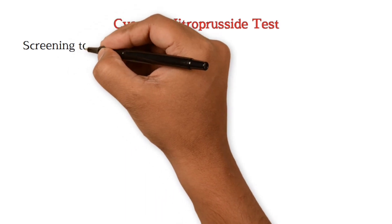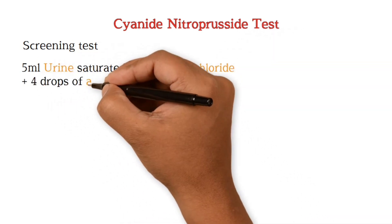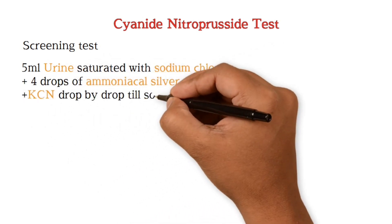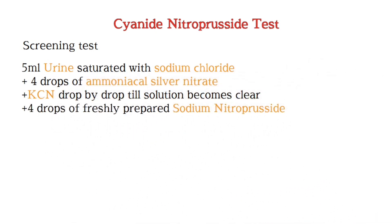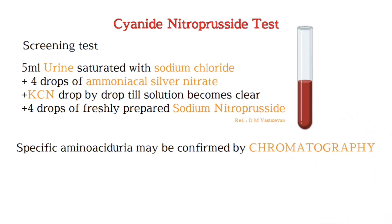Now a brief overview of the cyanide nitroprusside test. Take 5 ml of urine and saturate it with sodium chloride, then add 4 drops of ammoniacal silver nitrate and potassium cyanide drop by drop until the solution becomes clear. Then add 4 drops of freshly prepared sodium nitroprusside. A positive result is indicated by the appearance of a red-colored complex, confirming the presence of cysteine. Specific aminoacidurias may be confirmed by chromatography.